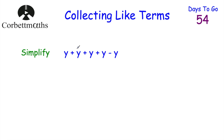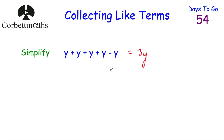So we just collect the like terms. y + y is 2y, plus another y is 3y, plus another y is 4y. But then we take away one of the y's — so four y's take away a y gives 3y. The answer is 3y. Well done if you got that.